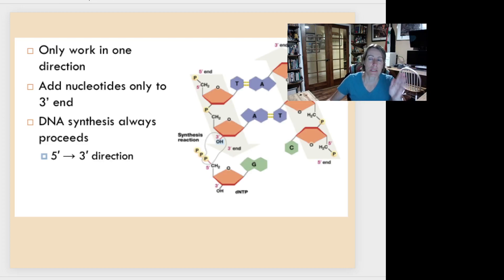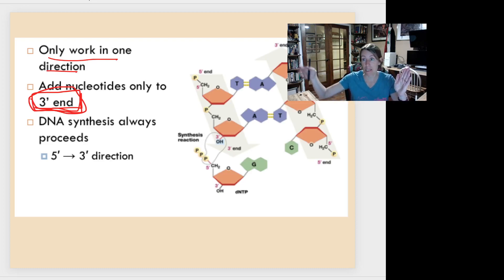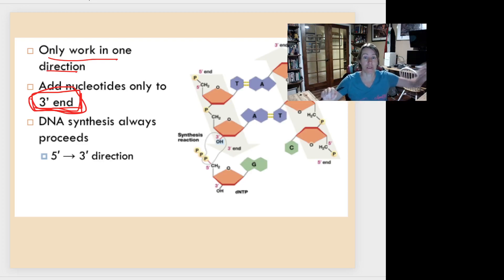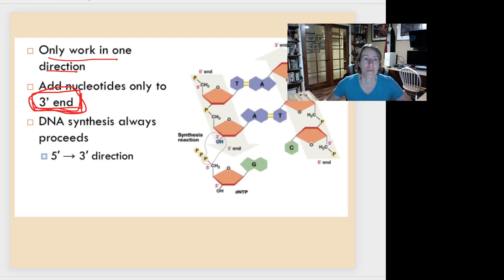Identifying the three prime and five prime ends is crucial for understanding DNA replication, because the enzyme that builds DNA can only work in one direction — it can only add onto a three prime end. This is one of the most important things to remember: if you want to extend or build a piece of DNA, you can only make it longer from the three prime end. It's like writing a sentence — you add words onto the end before the period; you don't write it backwards from the period.